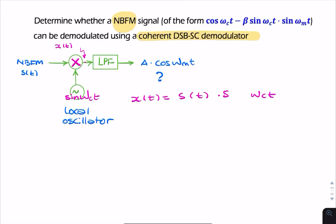Let me write that neatly. Sine ωct. So I can now replace S(t) with the narrowband FM expression we're given. So that's cosine ωct times sine ωct minus β sine ωct multiplied by sine. So that would be sine squared multiplied by sine ωmt.